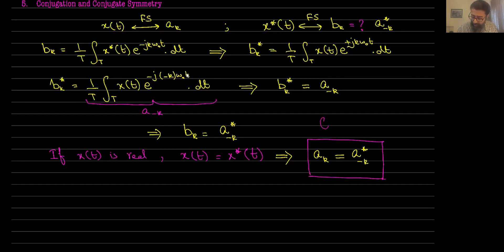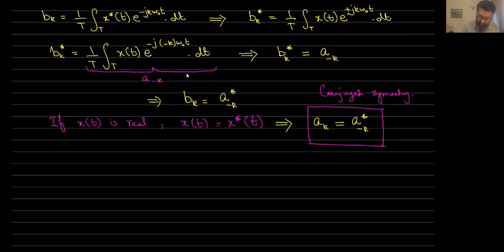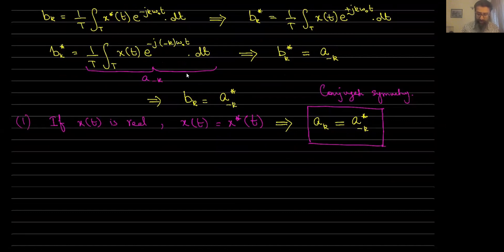This is called conjugate symmetry. So what that means is a_{+1} is going to be equal to the conjugate of a_{-1}, a_{+2} is going to be equal to the conjugate of a_{-2}, and so on and so forth. If the signal is real, it will always satisfy this conjugate symmetry property. This is one result we have from the conjugation property.